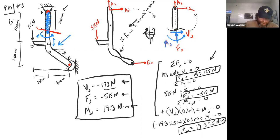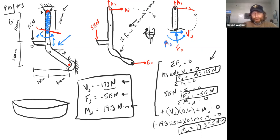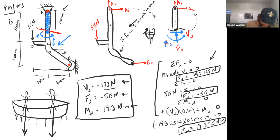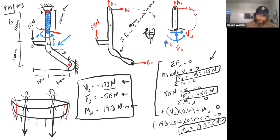For example, consider a concrete canoe competition. You've got two people sitting in it, a buoyant force along the bottom, and their weights. If you do the internal forces, right up at the top of the canoe there are almost no forces, so you don't need much material there — you can make it thinner. That's how we optimize design.